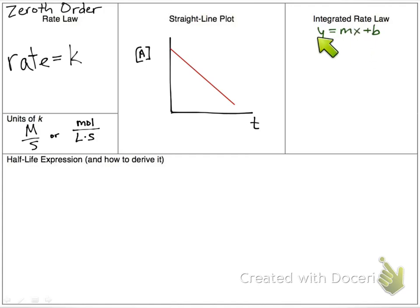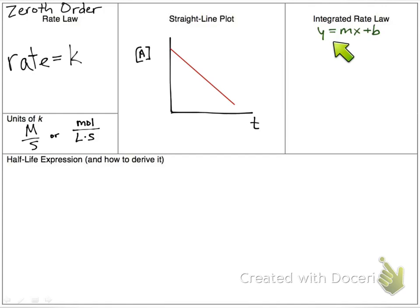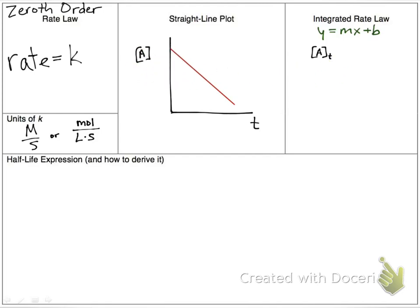For writing our integrated rate law from this, we've already done the integration part in coming up with this straight-line plot. So we can just write our integrated rate law by following the equation for a line, y equals mx plus b. Our y is going to be our concentration at any given time t. Our x variable is time, on our horizontal axis.